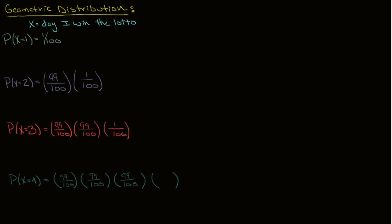And the last day I win the lotto, and the chance that I do that is always 1 over 100. So you can see a pattern forming here, but I might not win the lottery on day four either. It could be day five, it might even be day 1,000.